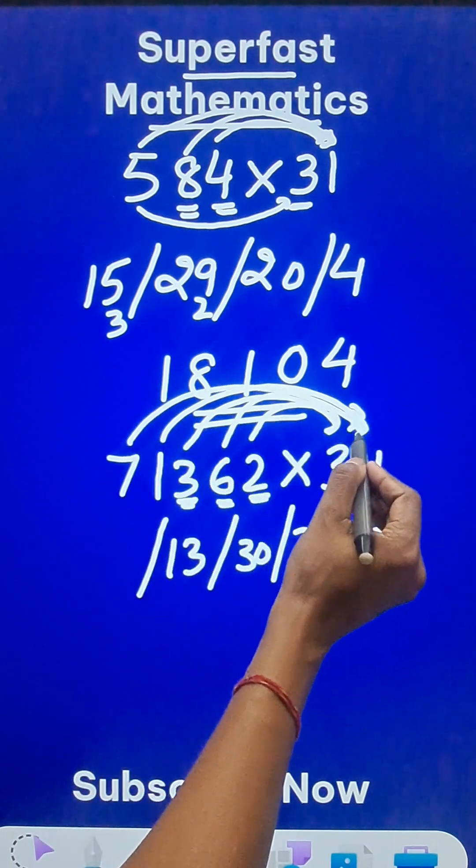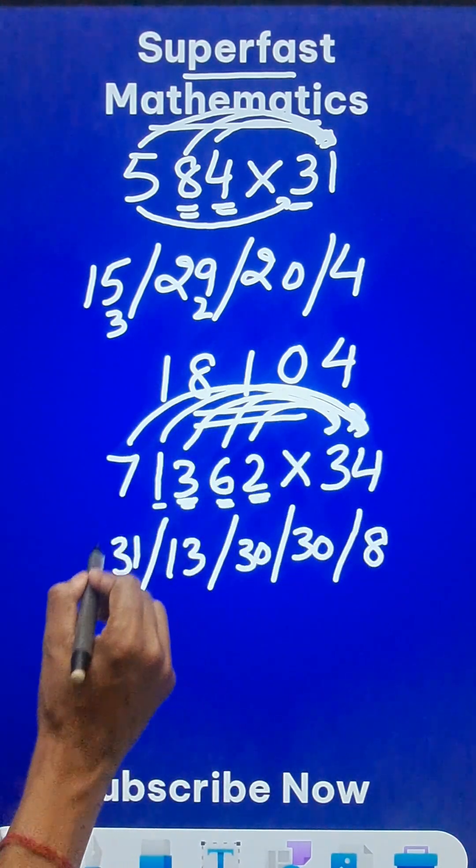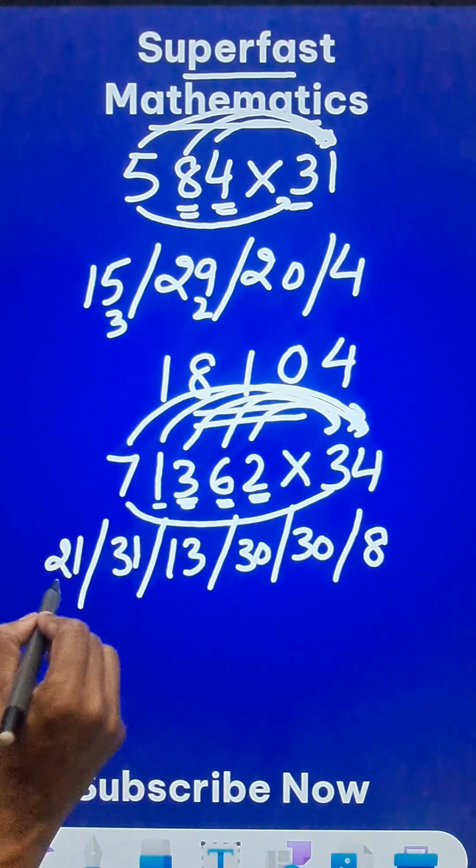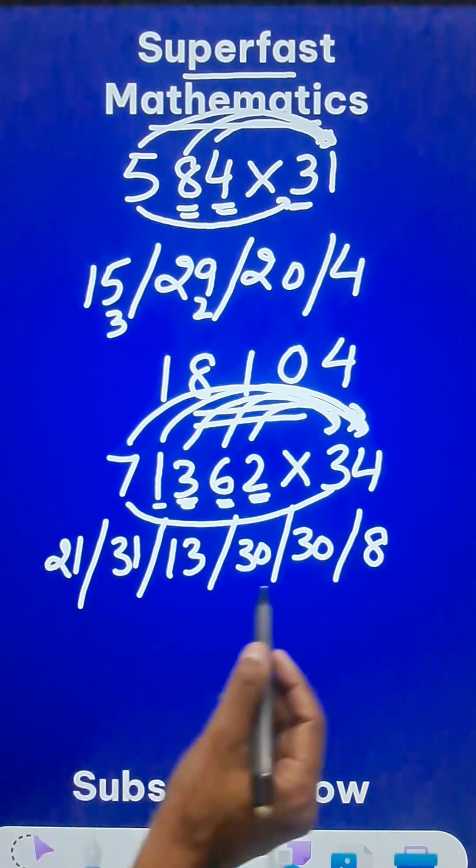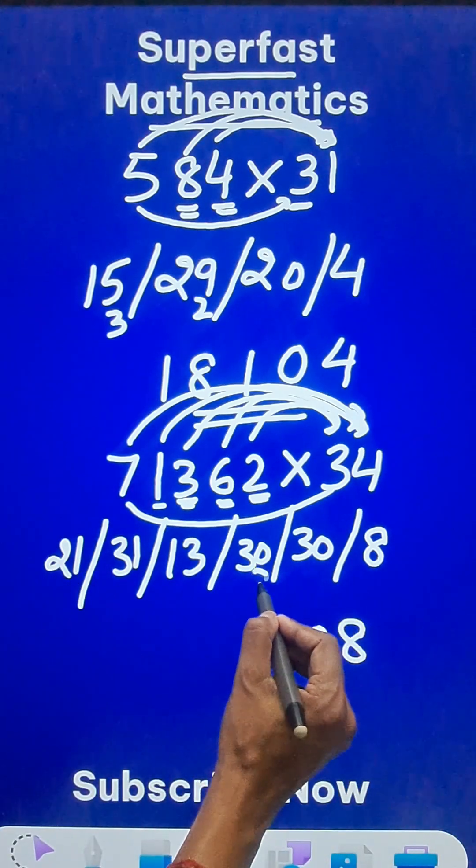4 plus 9 is 13. And then 28 plus 3 is 31. And finally, 7 threes are 21. So you need to write 21 here as the last number. So start from the unit digit 8. 30 means 0, 3 carry.